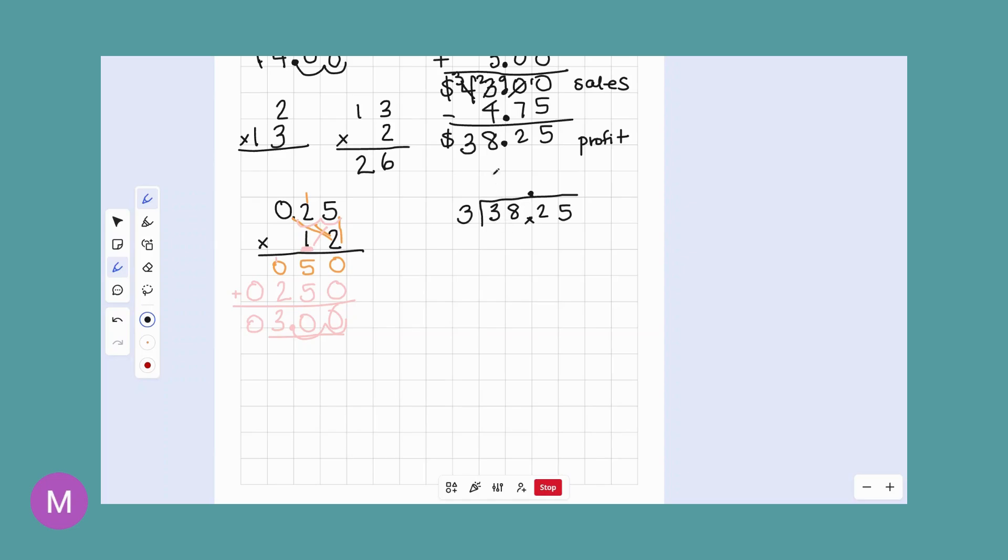Three goes into three one time. One times three is three. Nothing left over. Bring down the eight. Three into eight, two times. Two times three is six. Two left over. Bring down the two. And see how graph paper is very helpful with division. If you don't have graph paper handy, you can also take lined notebook paper and turn it sideways and you can have lines going up and down. Three into 22. We know it can go seven times. Seven times three is 21.